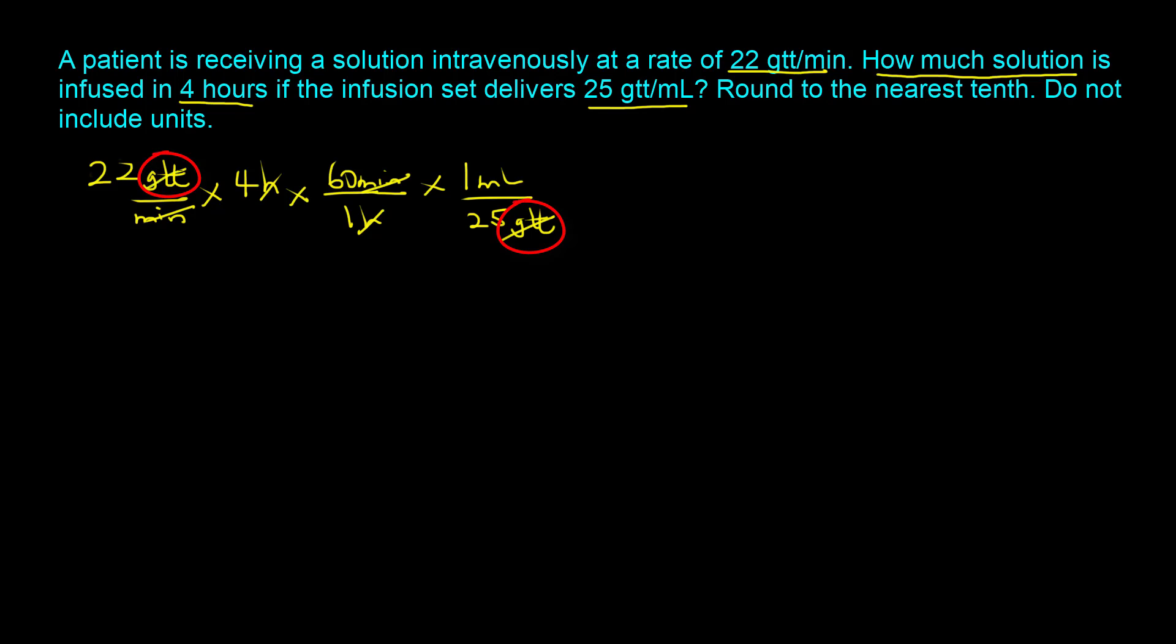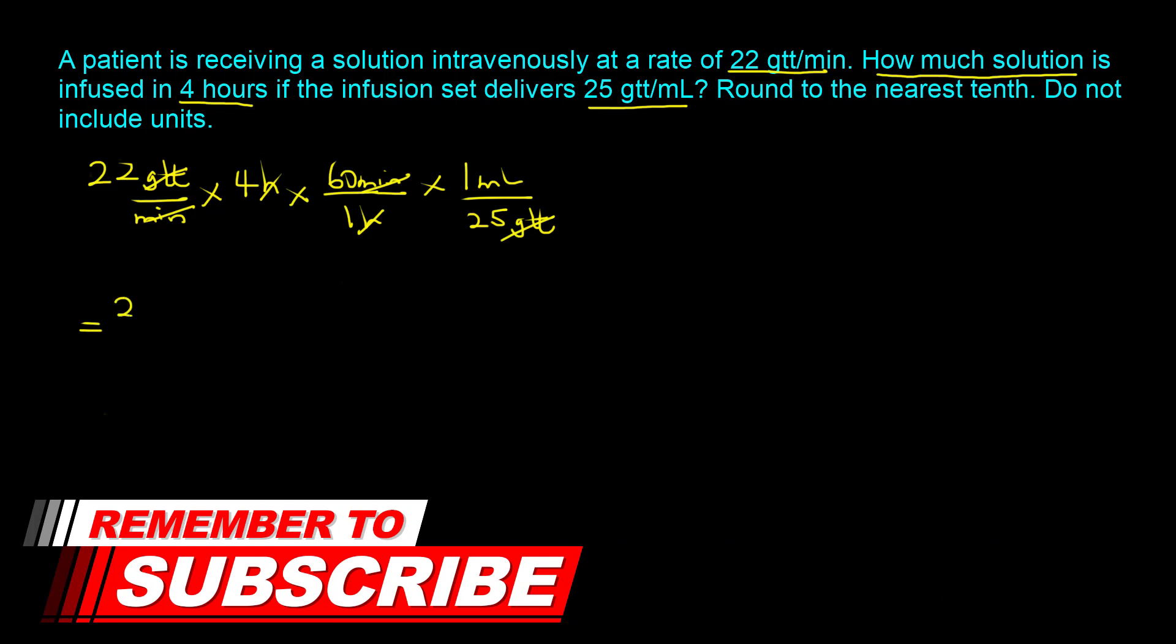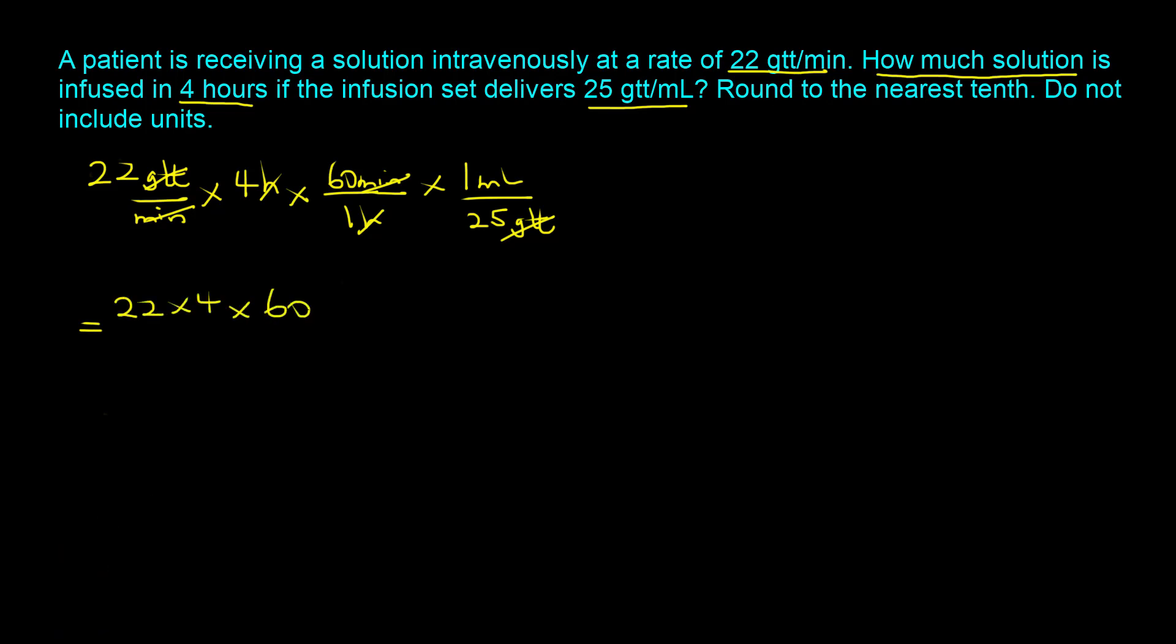We end up saying that one milliliter contains 25 drops, and the drops cancel out. Now you are left with milliliters. The next step would be to take all the terms in the numerator and multiply them out. That would be 22 times 4 times 60 times 1 milliliter, and we divide that by everything in the denominator, which is 1 times 25. If you do the math, you end up with 211.2.